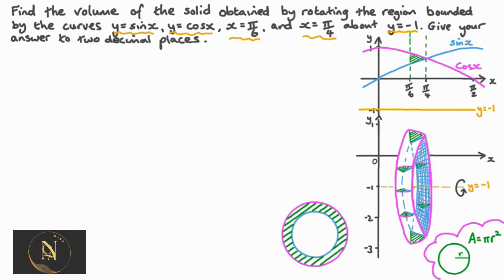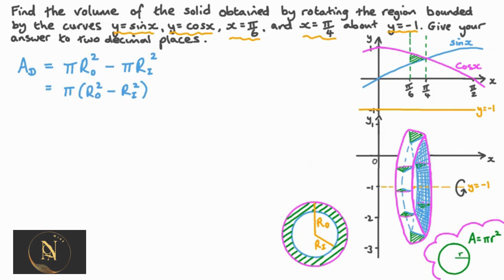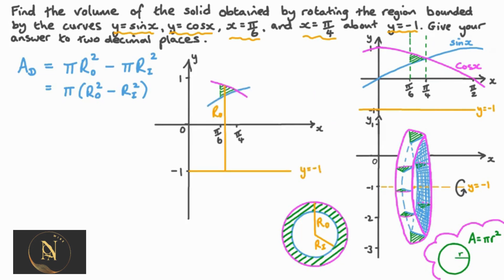To find the area of these cross sections, since the area of a circle is pi times the radius squared, letting r_o (outer radius) be the radius of the outer circle and r_i (inner radius) be the radius of the inner circle, the area of a cross sectional disk A_d equals pi times r_outer squared minus pi times r_inner squared, taking pi as a common factor. Recalling that the centre of rotation is at y equals negative 1, the outer radius r_o is the distance from the centre of rotation to y equals 0, which is 1 plus cosine x.